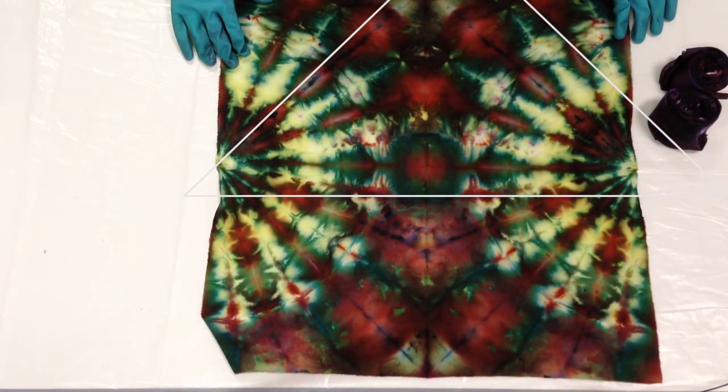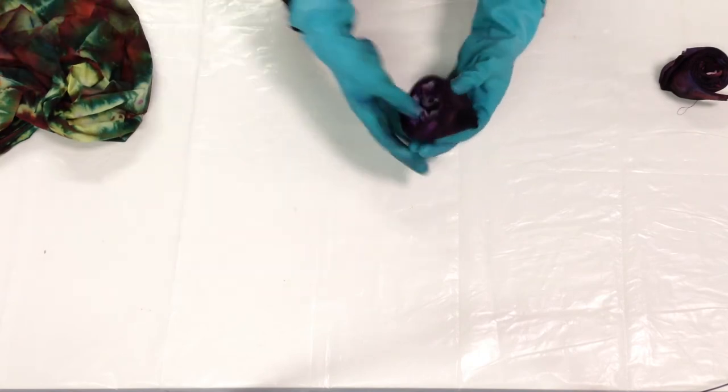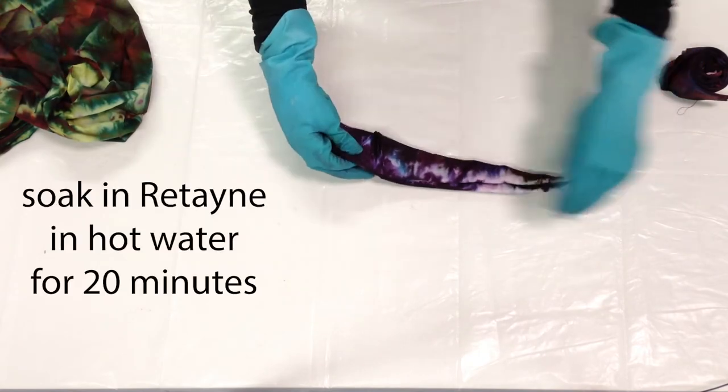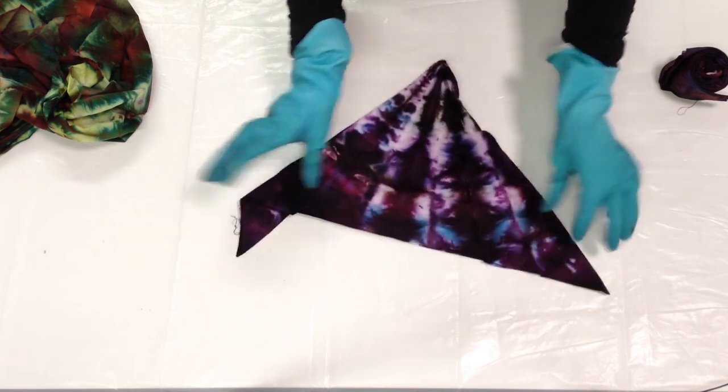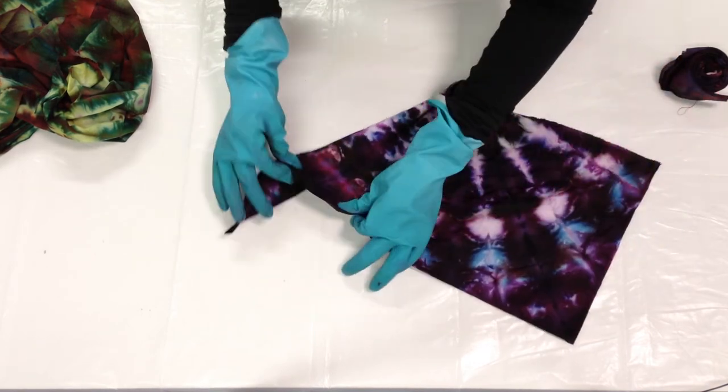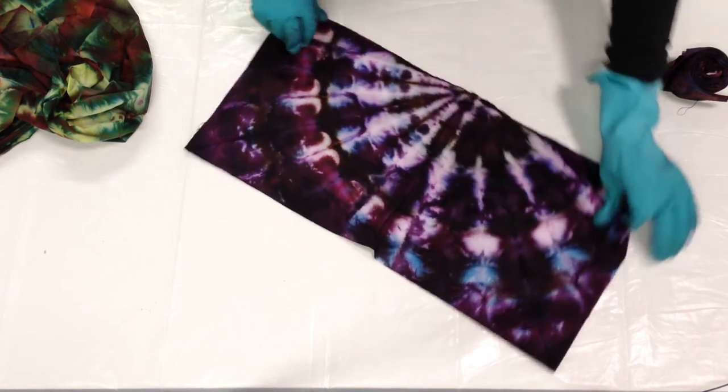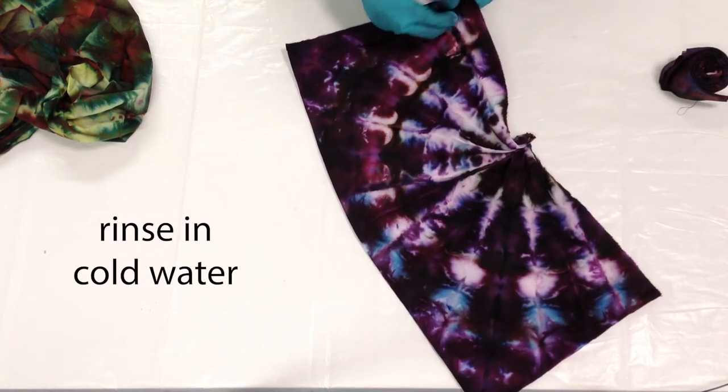Nice. Rinse out the detergent. And then let the fabric soak in a splash of Retain Dye Fixative for about 20 minutes. Mix the fixative with hot water. Then rinse that out.